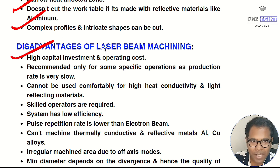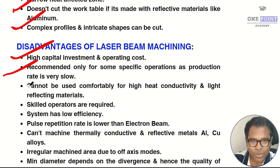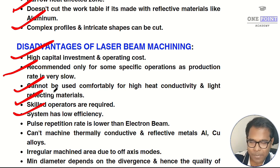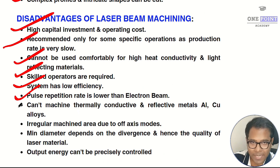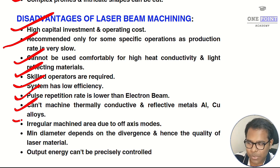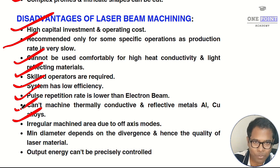Disadvantages of laser beam machining: high capital investment and operating cost; recommended only for specific applications due to low production rate; cannot be used comfortably for high-heat-conductivity and light-reflecting materials, as heat disperses during striking; skilled operators are required; the system has low efficiency; pulse repetition rate is lower than electron beam machining due to capacitor charge/discharge time lag; irregular machined area can result from off-axis modes; minimum diameter depends on beam divergence and convex lens quality, which adds cost; and output energy cannot be precisely controlled.